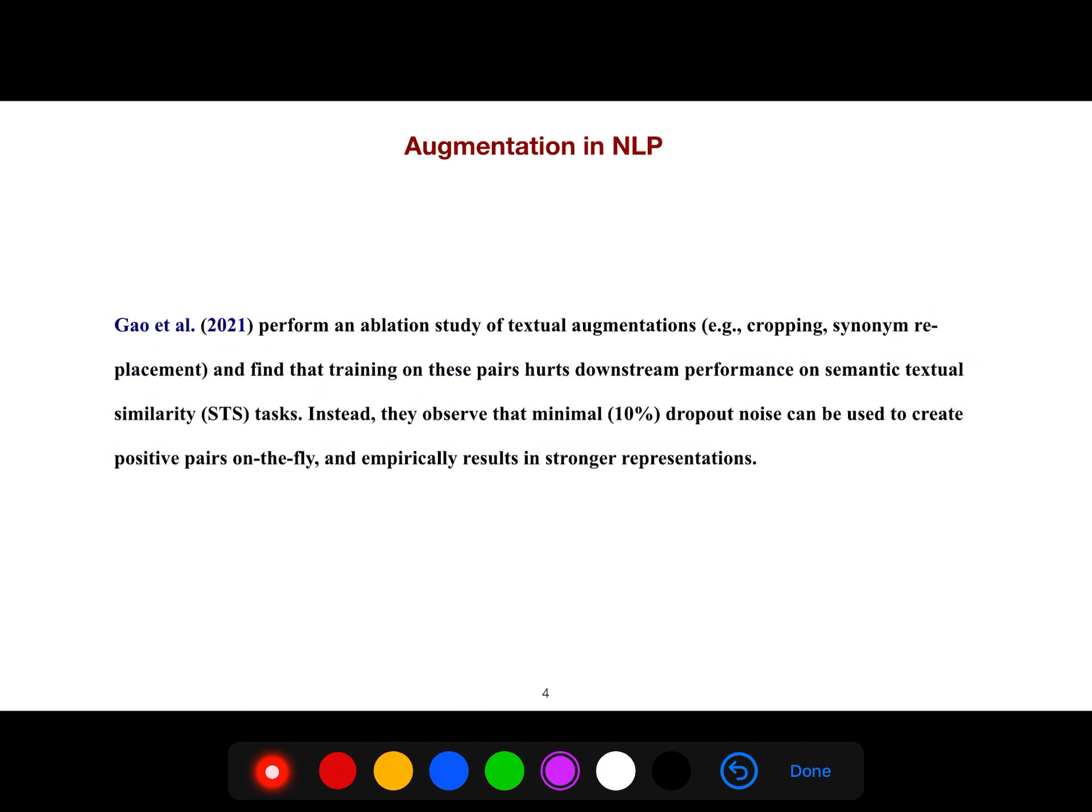Gao performs an ablation study of textual augmentations, things like cropping, synonym replacement, etc., and finds that training on these pairs hurts downstream performance on semantic textual similarity tasks. Instead, they observe that minimal dropout noise can be used to create positive pairs on the fly, and empirically results in stronger representations.